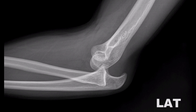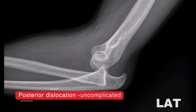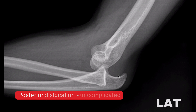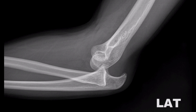This case shows an uncomplicated posterior dislocation of the elbow. As you know, we name the dislocation according to the distal side that is dislocated. In this case, the ulna has dislocated posteriorly, therefore this is a posterior dislocation, and it is uncomplicated.